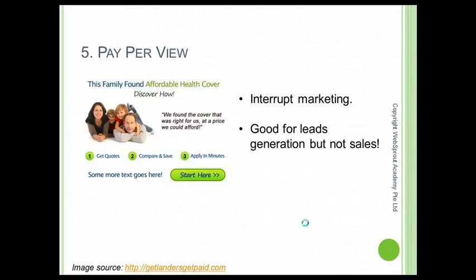The last type of traffic is pay-per-view. Pay-per-view is an interrupt marketing technique — when someone is viewing a website, your advertisement will pop under and create another window. The viewer had no intention of visiting your page, but if it's a great offer they may take it up. With this in mind, pay-per-view is good for lead generation but not for sales. Since in ClickBank we are looking for sales and transactions, I would suggest you don't use pay-per-view for ClickBank offers.